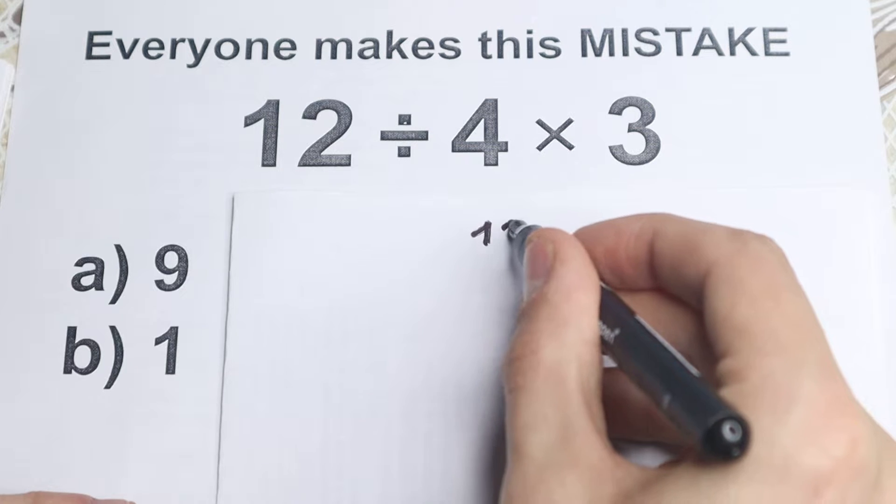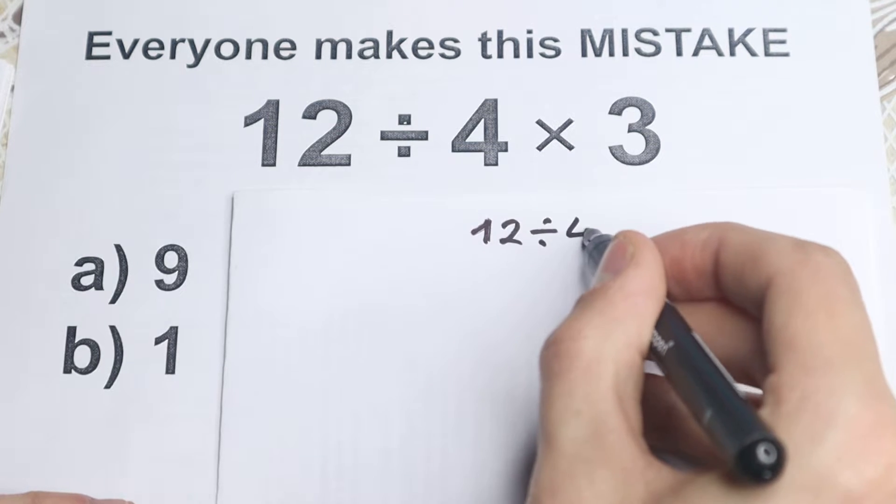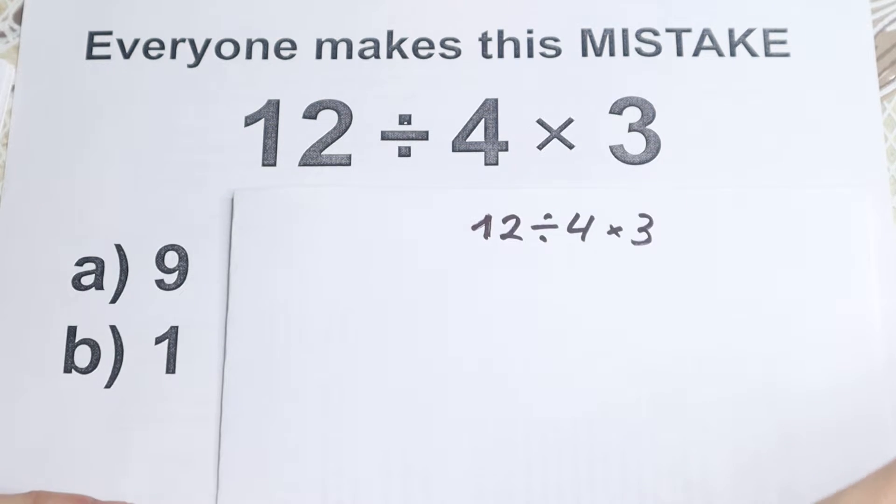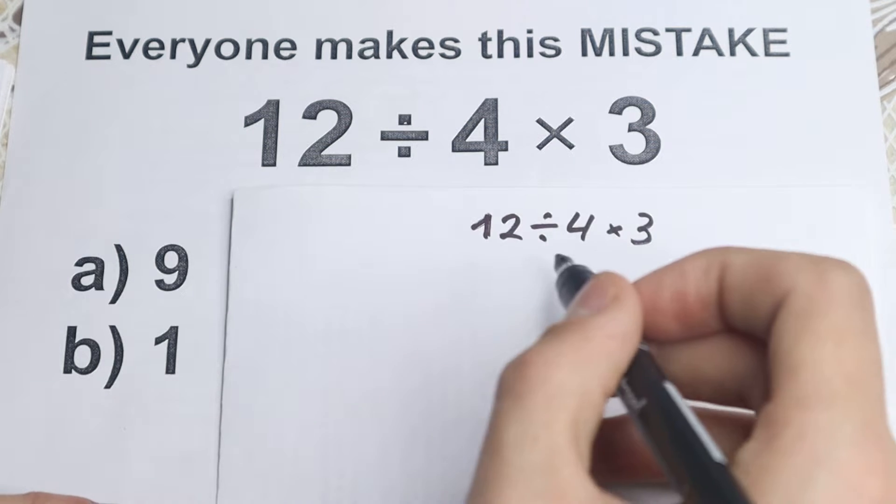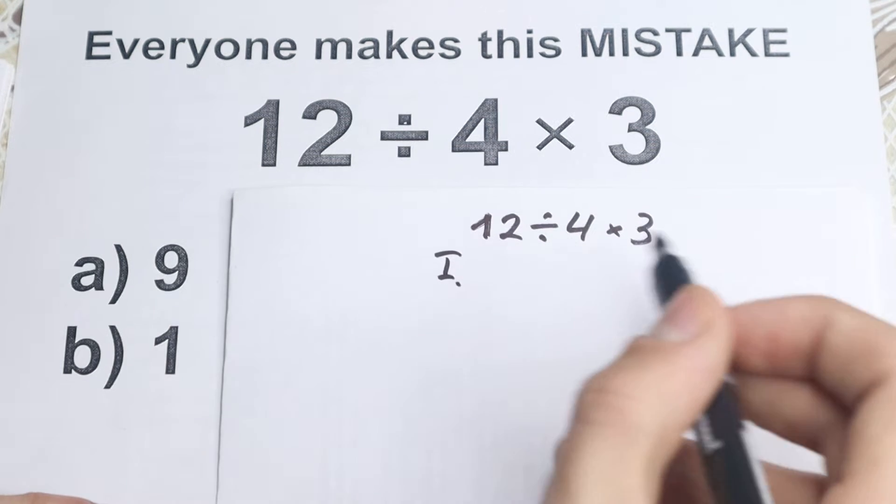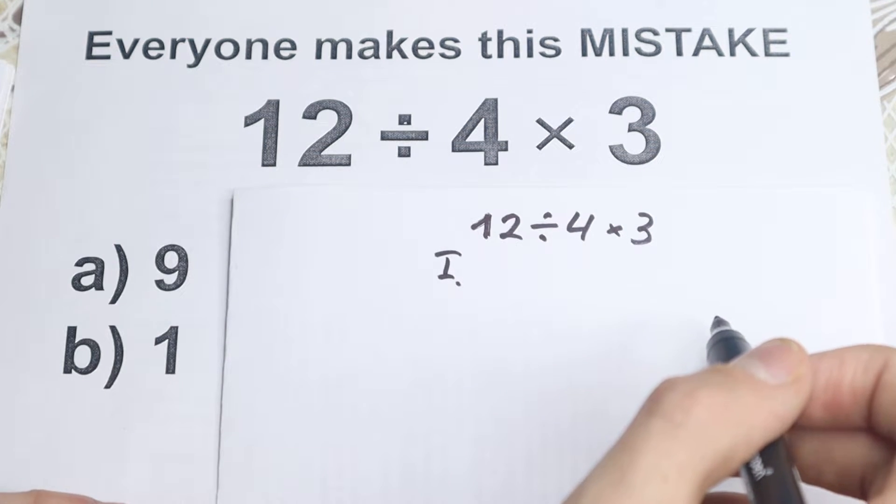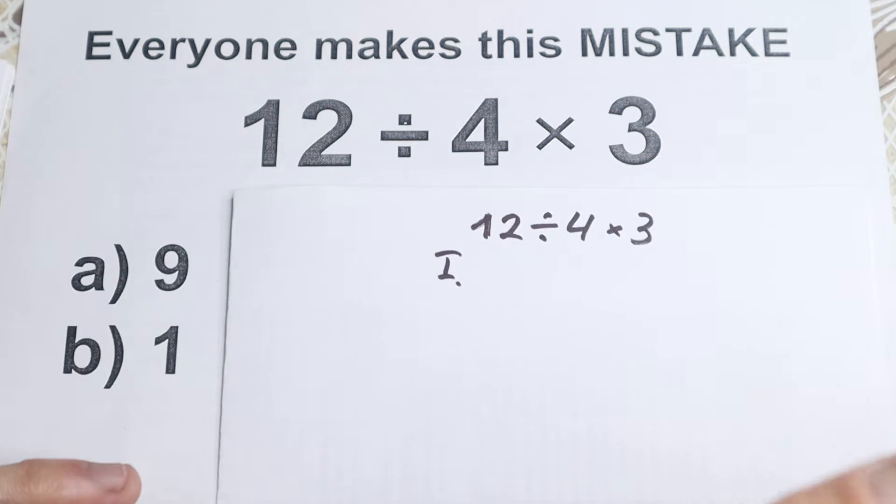So I just want to start it. We have 12 divided by 4 and times 3. And one part of students solve it like that. This is the first way. I don't want to tell if this is correct or incorrect, but we have this approach.